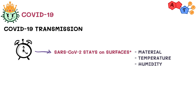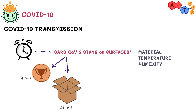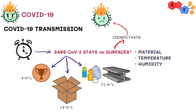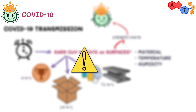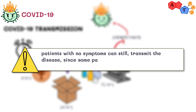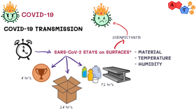Please note that the period of time coronavirus can survive on surfaces varies from hours to days, depending on the material, temperature, and humidity. A study showed that SARS-CoV-2 can stay on copper for up to 4 hours, cardboard for up to 24 hours, and on plastic and steel for up to 72 hours. If a surface is not clean, clean it yourself with simple disinfectants — this should kill the virus. Keep in mind that patients with no symptoms can still transmit the disease.